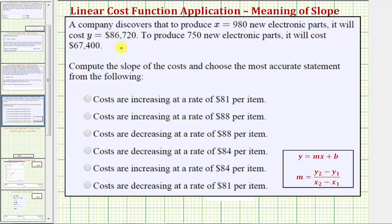So the first ordered pair is (980, 86720) because to produce 980 items, it costs $86,720. And the second ordered pair would be (750, 67400).